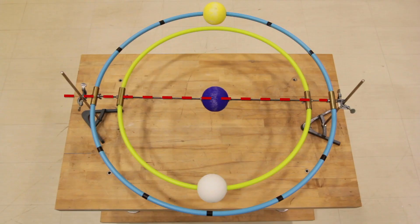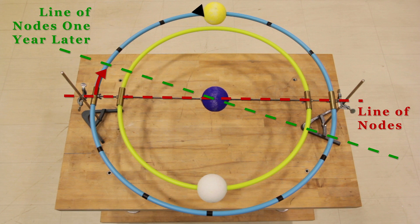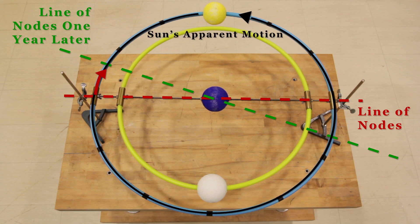Note that the line of nodes processes westward about 19 degrees per year or two-thirds of a black tape marking. Thus, the apparently eastward-moving Sun passes through the westward-moving line of nodes sooner than the previous year. So eclipse seasons are closer to five and a half months apart than six months apart.